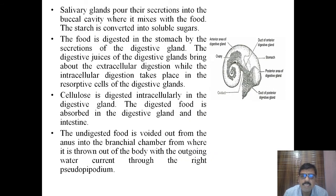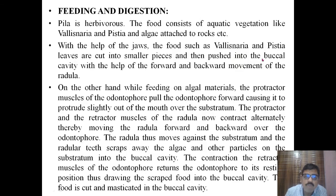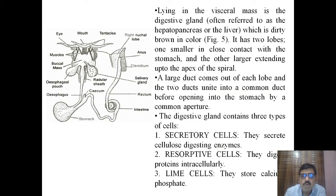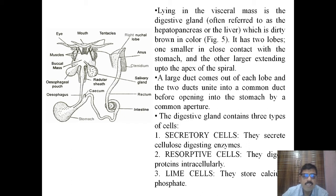The digestive gland has two lobes: one smaller lobe in close contact with the stomach, and the other larger lobe extending up to the apex of the spiral, which is the terminal end of the shell. A large duct comes out of each lobe, and the two ducts unite into a common duct before opening into the stomach by a common aperture. The digestive gland comprises three types of cells: secretory cells, resorptive cells, and lime cells.